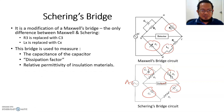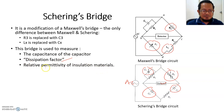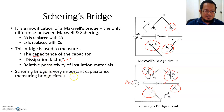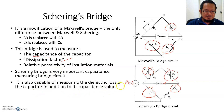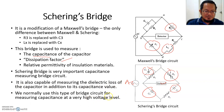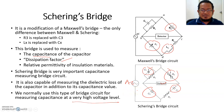This bridge is used to measure mainly the capacitance of the capacitor, dissipation factor, as well as relative permittivity of insulation material. That's just another property of material — we're not going to talk a lot about this today, just the capacitance measurement. The Schering bridge is a very important capacitance measuring bridge. It is also capable of measuring the electric loss of a capacitor in addition to its capacitance value. We normally use this type of bridge for measuring capacitance at very high voltage levels — those taking high voltage power systems may have learned this.